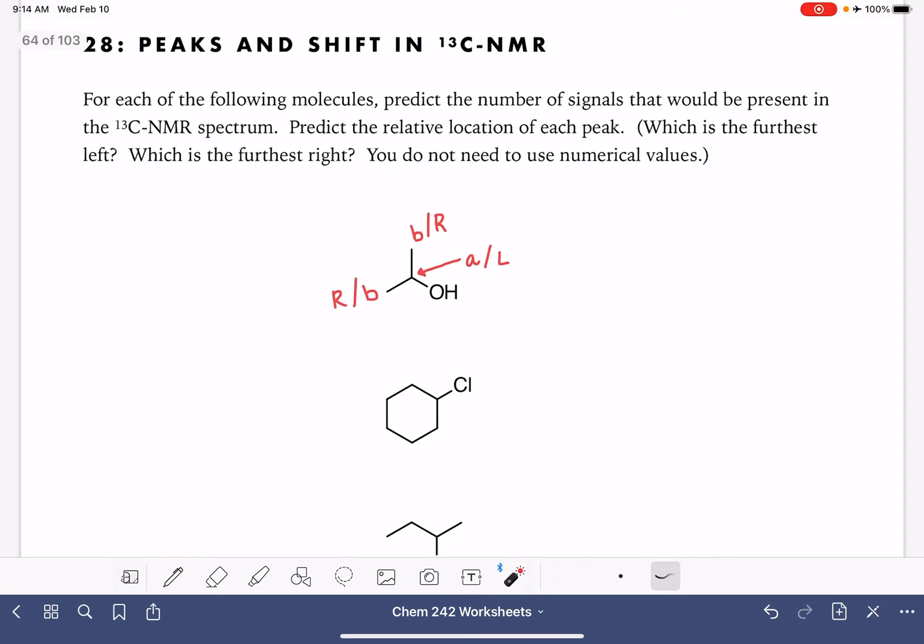For our next molecule, here is our plane of symmetry, so this is one carbon. These two are identical to each other. These are identical to each other, and this one is different. In terms of shift, because carbon A is closest to the chlorine, it's going to be furthest to the left on the spectrum. D, which is the furthest away from the chlorine, will be to the right.